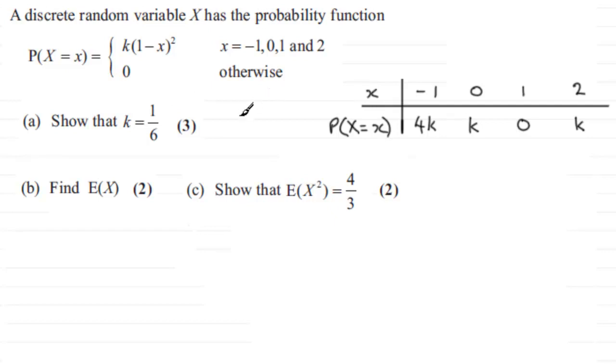Now you remember in part A I drew you up the probability distribution function and we had to show that K was equal to 1 sixth and we did that by adding up the probabilities and showing that it came to a total of 1.